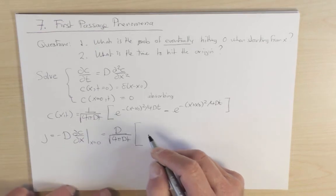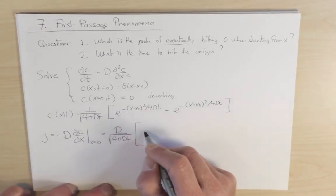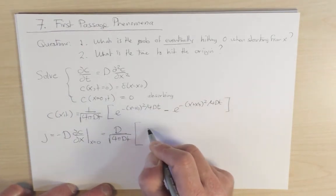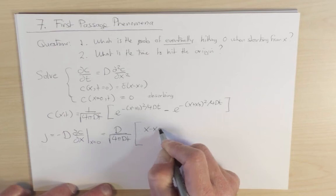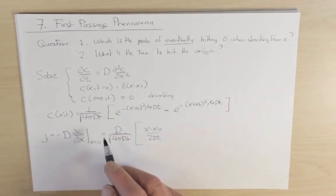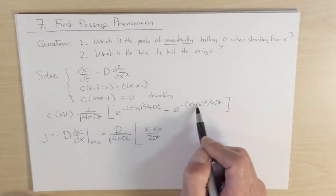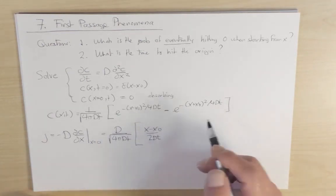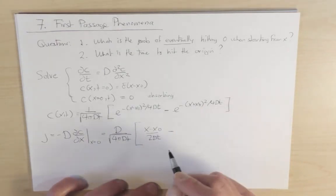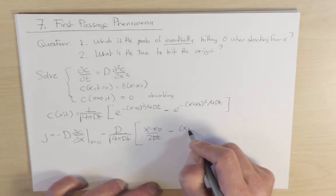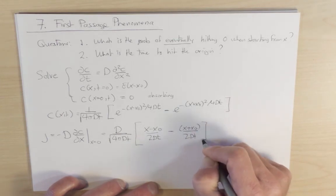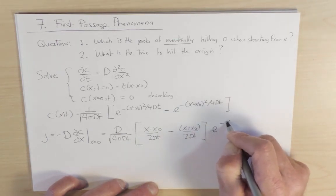And because of the minus sign it cancels the minus sign here, and so when I differentiate I get 2(x minus x naught) over 4Dt, so that's (x minus x naught) divided by 2Dt, and then times the exponential. But I'm evaluating the exponential at x equals zero, in which case I have the same factor, so I'll leave it as a common factor on the outside. And then when I do the second differentiation of the second term, I'm going to get (x plus x naught) divided by 2Dt, and then I have the common factor e to the minus x naught² over 4Dt.